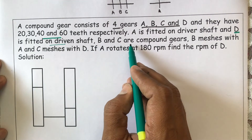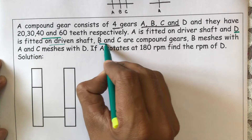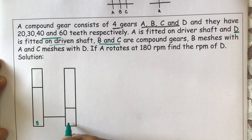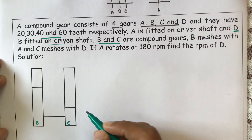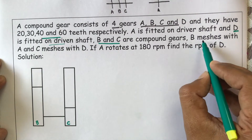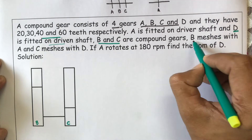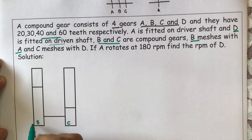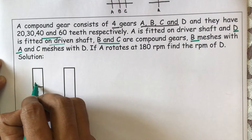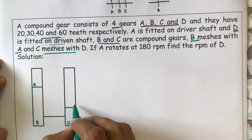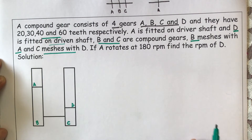B and C are compound gears mounted on the same shaft. Let us say this is B and this is C, as these two are mounted on the same shaft. B meshes with A, and C meshes with D.